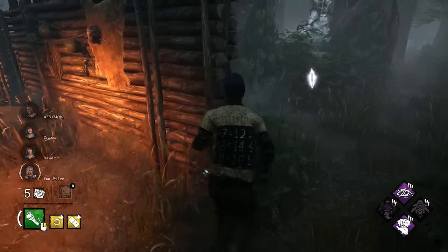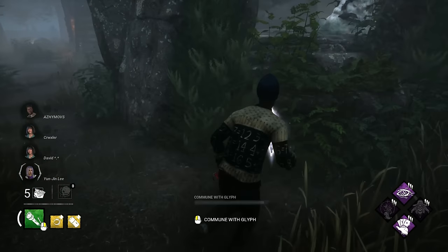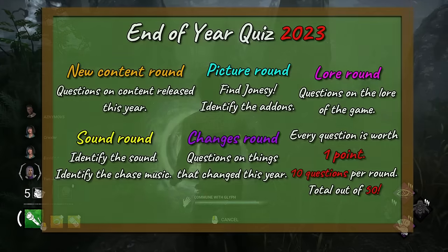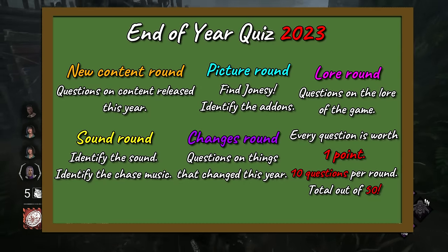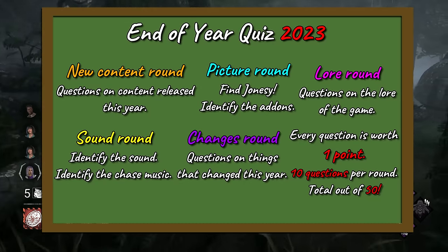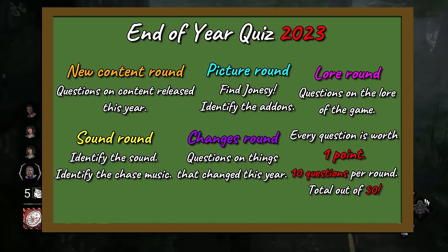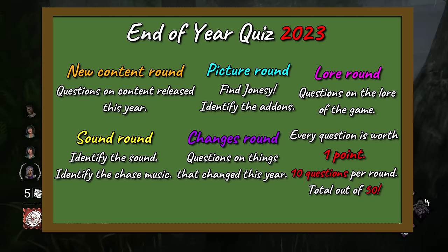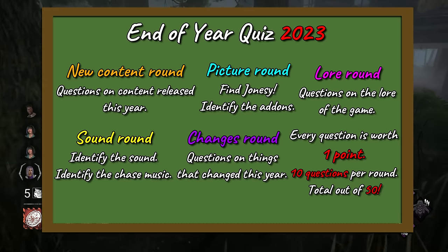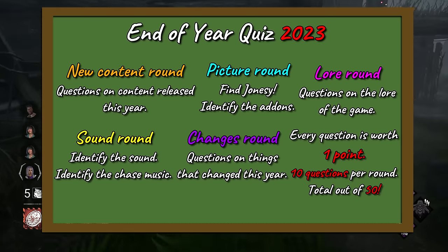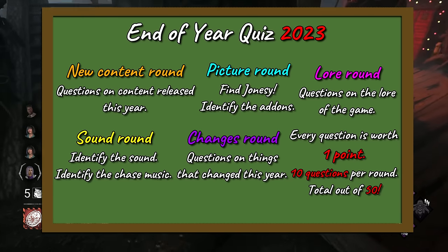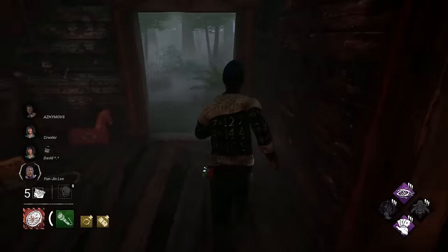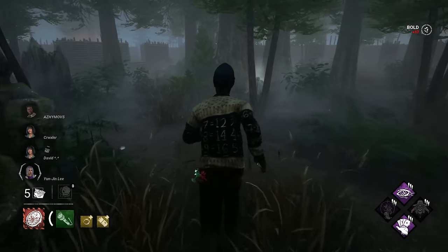Hey everyone, today I'm going to be testing your knowledge on DBD in a variety of different categories. There will be five rounds in this quiz, ten questions per round, and each question is worth one point, for a total out of fifty. We have a new content round, a picture round, a lore round, a sound round, and finally a changes round. Let's get right in with the new content round.